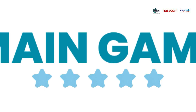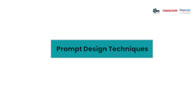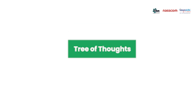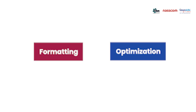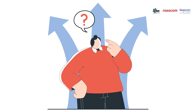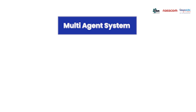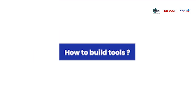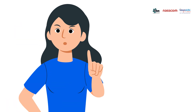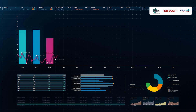Next is prompt engineering — how best we can communicate with LLMs. This is the main game in every Agentic AI solution. We will learn prompt designing techniques, chain of thoughts, tree of thoughts, one-shot, few-shot, formatting, and optimization. Next is Agentic AI itself — multi-step problem solving, how to implement ReAct (Reason + Act), multi-agent systems using LangChain and LangGraph, how to build tools, how to build agents, and how to deploy an MCP server. As the tech is upgrading day by day, we'll add extra topics to stay relevant to the current trend.